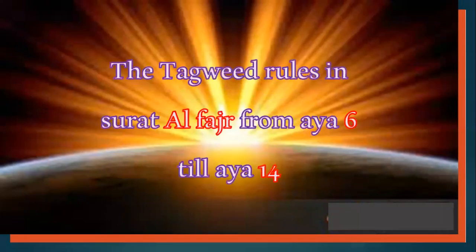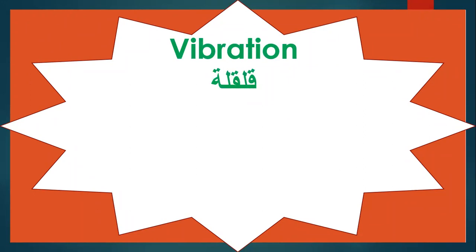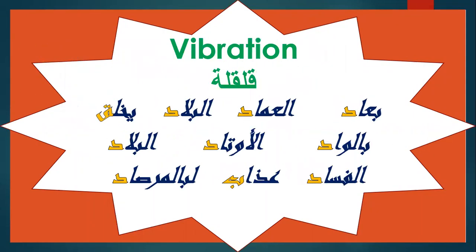Let's go to the second part: studying the Tajweed rules in Surah Al-Fajr from Ayah 6 to Ayah 14. Number one: Qalqala — Qalqala letters are found in the sentence 'Qad Bajad Qatun Ba-Ajin Dad.' In these ayat we can find Qalqala in the words: بِعَادٍ، الْعِمَادَ، الْبِلَادَ.